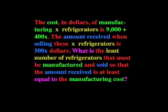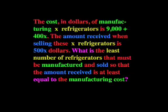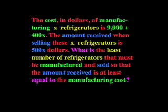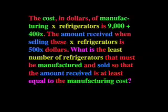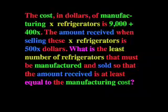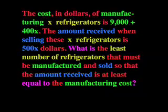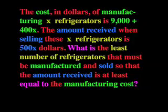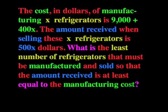Now we can review all of the elements in the question. The cost in dollars of manufacturing X refrigerators is 9,000 plus 400X. The amount received when selling these X refrigerators is 500X dollars. What is the least number of refrigerators that must be manufactured and sold so that the amount received is at least equal to the manufacturing cost?